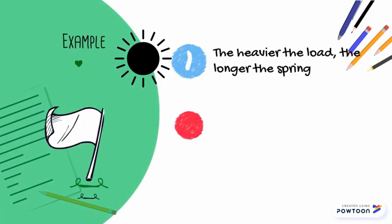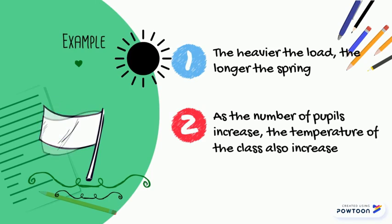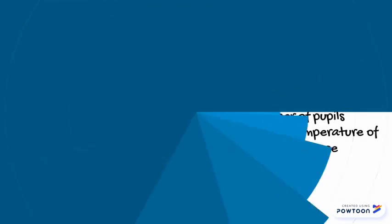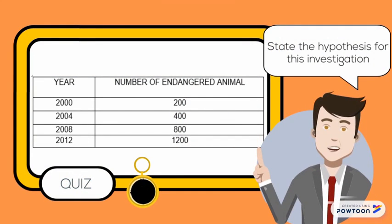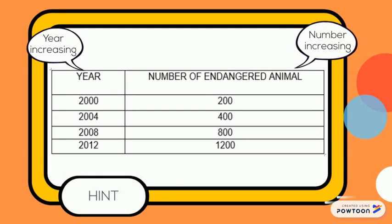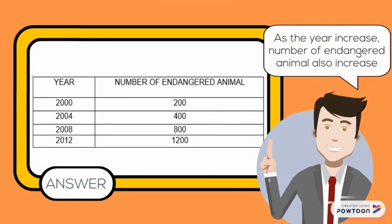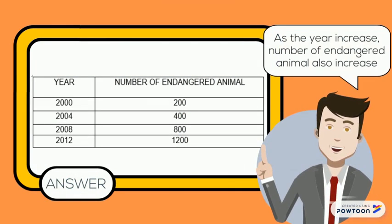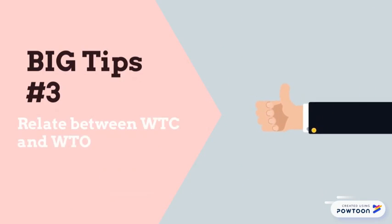For example, the heavier the load, the longer the spring. The number of pupils increases, the temperature of the class also increases. Quiz: state the hypothesis for this investigation. Look at the year and the number of endangered animals — both are increasing. As the year increases, the number of endangered animals also increases. Tip number three: relate between what to change and what to observe.